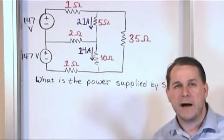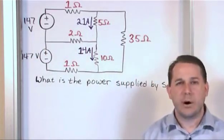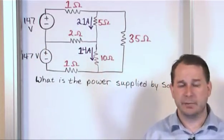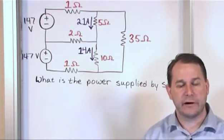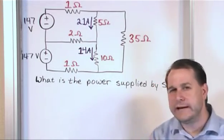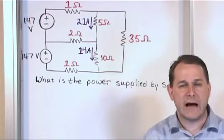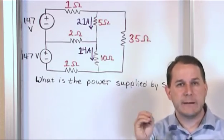Now your first thought might be well it's the same voltage right? So both of those sources must be supplying the same amount of power to the circuit. But that's not true because remember power is always equal to IV. Think of an IV that goes in your arm. Power is IV. The current times the voltage.